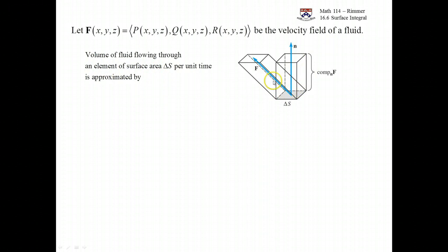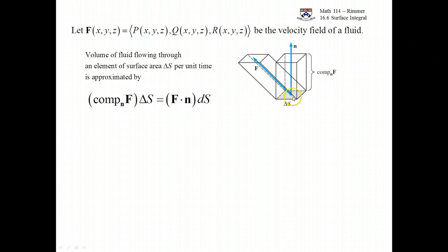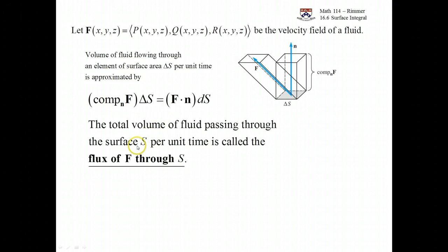We calculate the volume of fluid flowing through an element of surface area by projecting F onto N. The component of F onto N is found just by doing a dot product, giving us the height. We multiply that by the area of the base: the component of F onto N times delta S gives an approximation for the volume of fluid flowing through that element. The total volume of fluid passing through the surface per unit time is called the flux of the vector field through the surface.